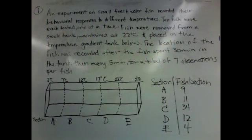An experiment on small freshwater fish recorded their behavioral responses to different temperatures. Ten fish were each tested, one at a time. Fish were removed from a stock tank maintained at 22 degrees Celsius, then placed in the temperature gradient tank below. The location of the fish were recorded after the fish spent 30 minutes in the tank, then every five minutes thereafter for a total of seven observations per fish.